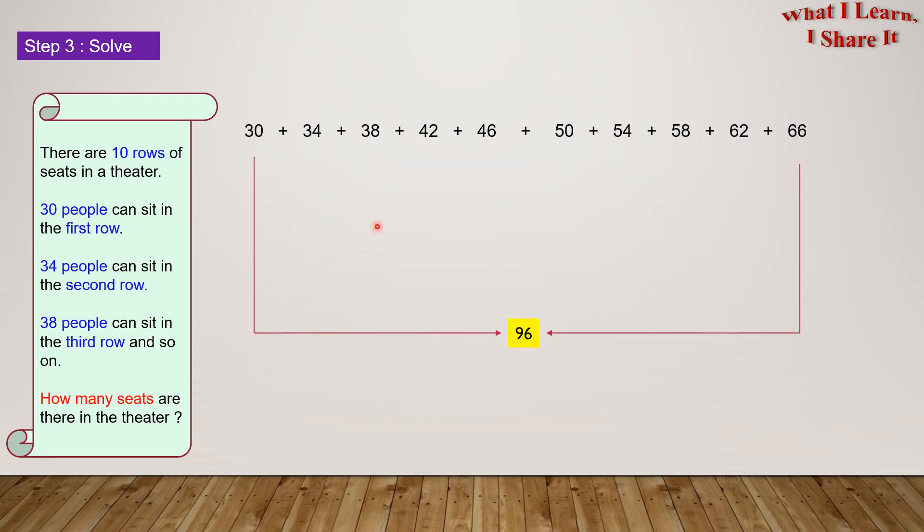Well, 30 plus 66 equals 96. 34 plus 62 is again 96. 38 plus 58 is 96. 42 plus 54 is 96. And last but not least, 46 plus 50 is 96. We can see the number 96 getting repeated again and again over here. So we can write a simple multiplication sentence for it.